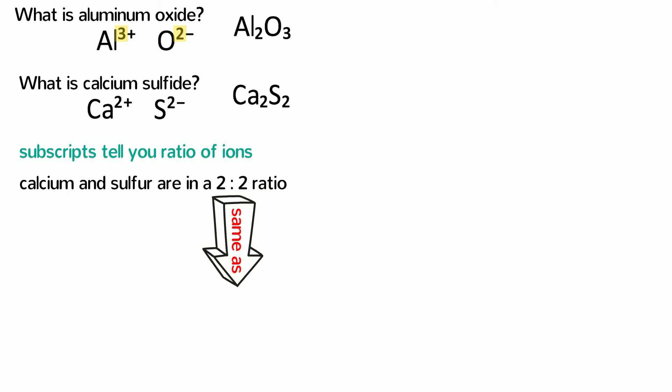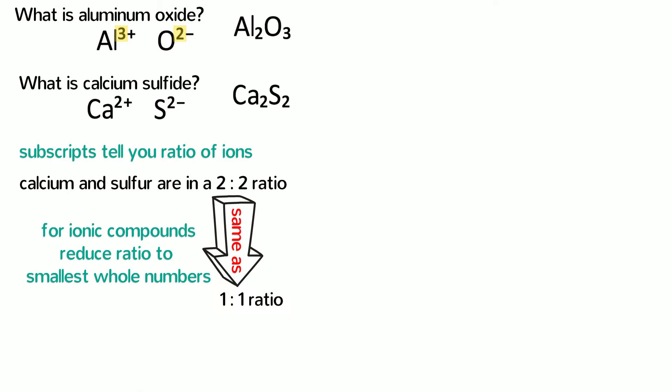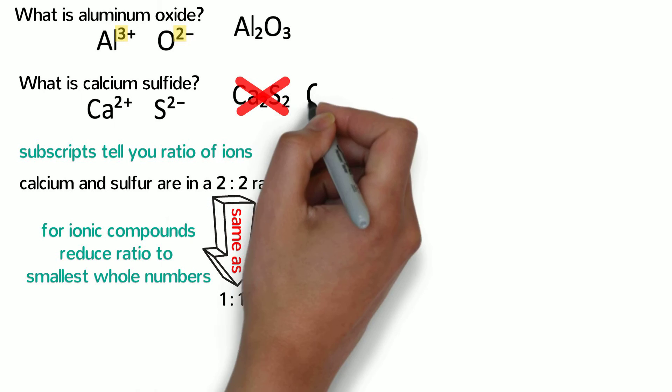And for ionic compounds, and only ionic compounds, we should reduce the ratio to the smallest whole numbers. So the formula of calcium sulfide is simply CaS.